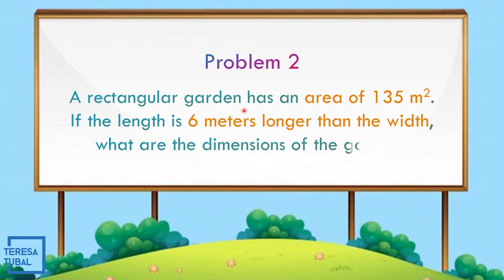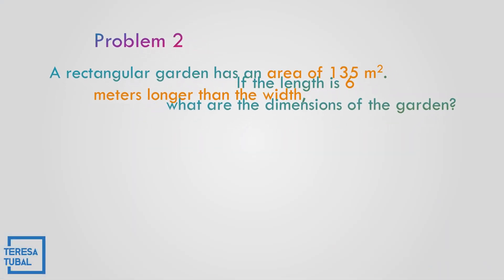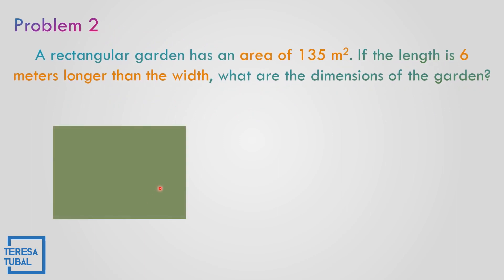Problem number 2. A rectangular garden has an area of 135 square meters. If the length is 6 meters longer than the width, what are the dimensions of the garden? Imagine this is the rectangular garden. Let x be equal to the width. How about the length? The length is x plus 6. Based on the problem, if the length is 6 meters longer than the width, so the width is x, 6 meters longer means x plus 6. And then the area is equal to 135.